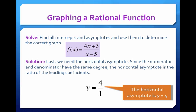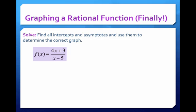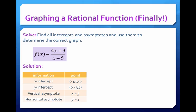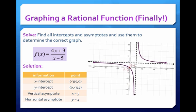And so we have a horizontal asymptote at y equals 4. So can we actually graph it? Here's just a table of everything we've done so far. We found the y-intercept, the x-intercept, the vertical asymptote, and the horizontal asymptote.